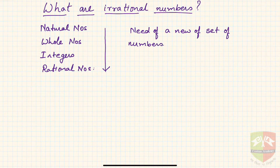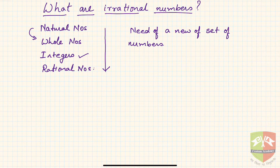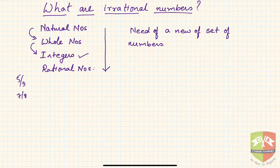We knew that a smaller number cannot subtract a bigger number, hence we had integers. We also knew that two equal natural numbers subtracted — for example, five minus five — didn't have a solution in natural numbers, but once zero was included in whole numbers, we could do five minus five. Similarly, three minus five was not defined in whole numbers, so we formulated integers. Then things like five upon nine or seven upon eight were not defined in integers, so we figured out rational numbers.